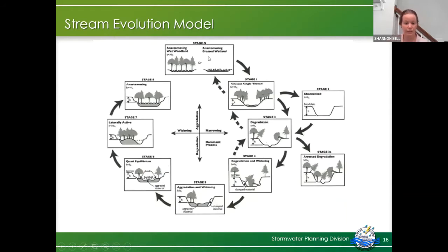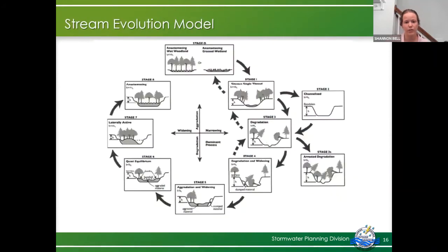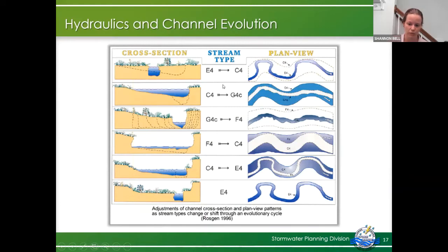With our stream restorations, we want to try to speed up that process and resize the channels to what they want to be and help reconnect them to the floodplain. Here is another way to look at it — a 2D cross-sectional model of what's happening, and then also a 3D model showing that the stream doesn't stay in the same place — it deepens, widens, and also moves laterally.